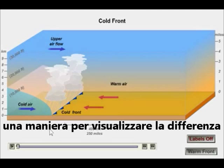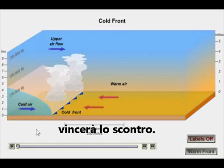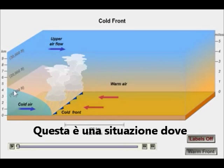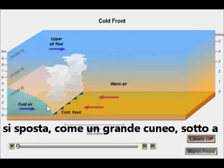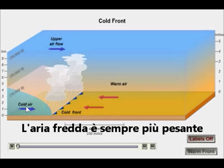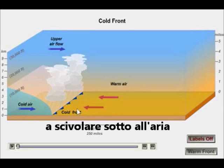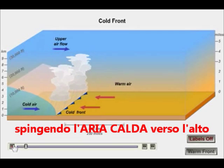One way to think about the difference between cold fronts and warm fronts is to think about which mass of air is going to win the battle. A cold front is a situation where cold air moves in like a big wedge underneath warm air. Cold air is always heavier than warm air, and so it's denser, and it's going to tend to slide under the warm air and push the warm air upward.